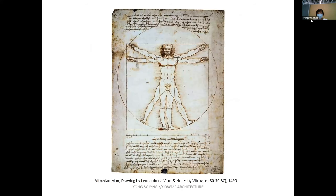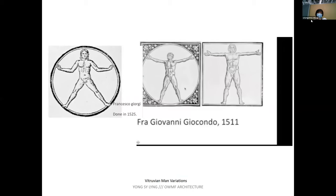There is also the famous Vitruvian Man drawing. Vitruvius described what is the perfect proportion of a man, inscribed in a circle and a square, but it wasn't actually drawn in his book — it was just a mixture of Latin and Italian description. Renaissance architects were all trying to decipher this previous idea of the perfect man. They had difficulties fitting a perfect human in both square and circle.